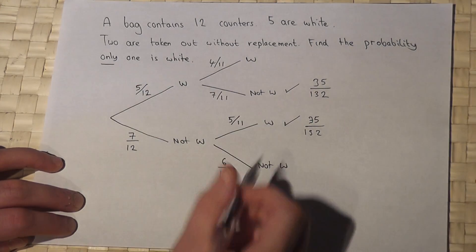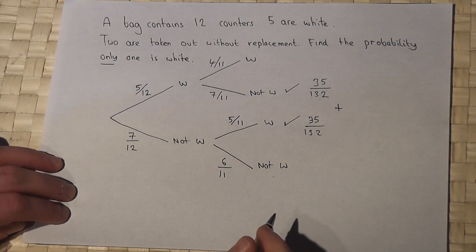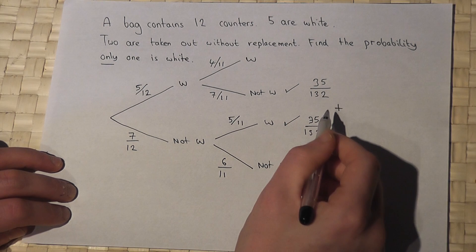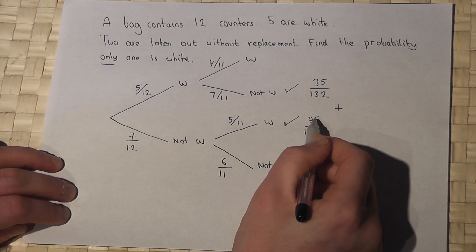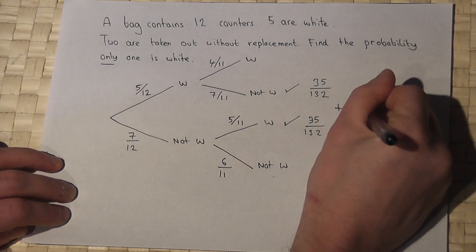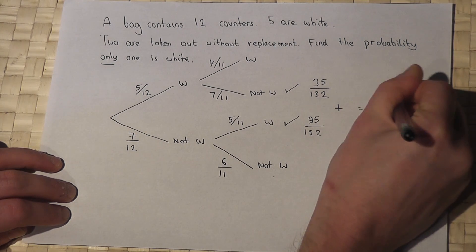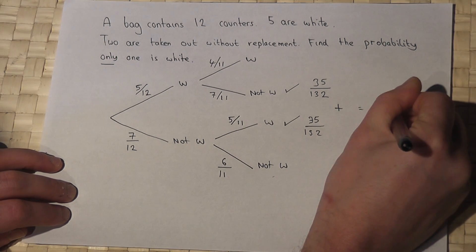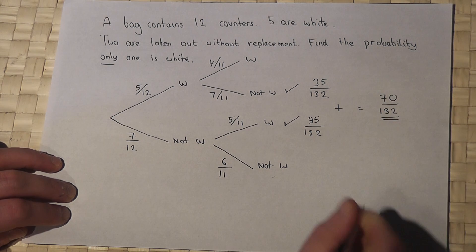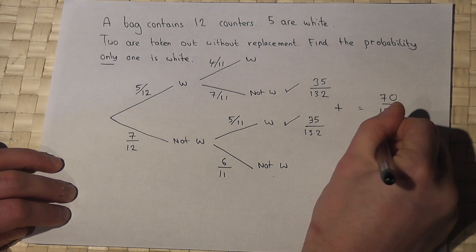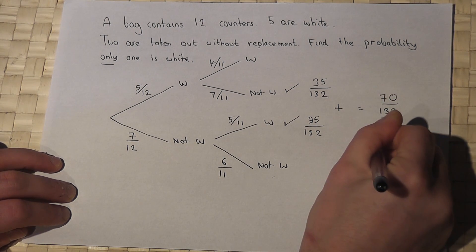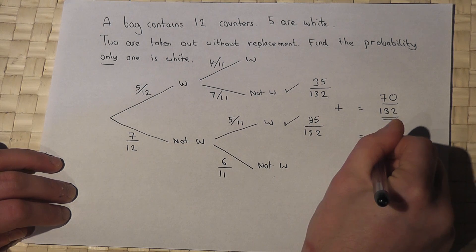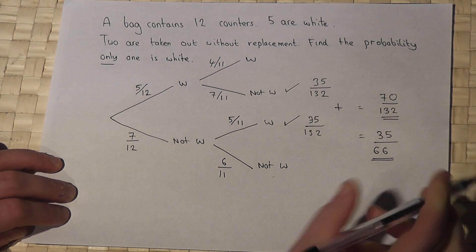Therefore, the final answer for only one white is these two options added together: 35 over 132 plus 35 over 132 equals 70 over 132, which cancels down to 35 over 66.